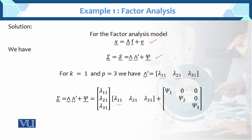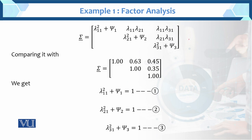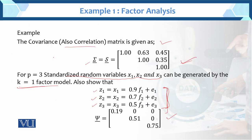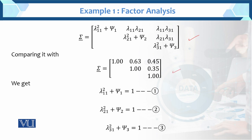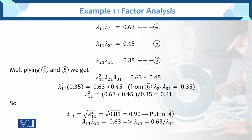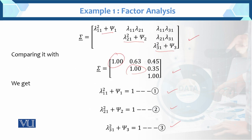After multiplication we get: lambda_11 squared plus psi_1, lambda_11*lambda_21, lambda_21*lambda_31, and so on. Comparing this with the given correlation matrix gives us equations: lambda_11*lambda_21 equals 0.63, lambda_11*lambda_31 equals 0.45, lambda_21*lambda_31 equals 0.35. These are equations 4, 5, and 6.